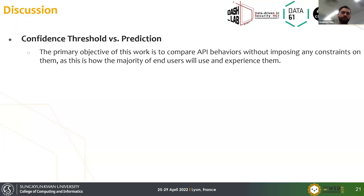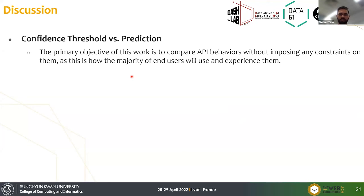In discussion, we considered whether to apply our own threshold or use the prediction as returned by the API. We use the prediction as-is because we don't want to impose additional constraints, since users will be using the API without self-defined thresholds.